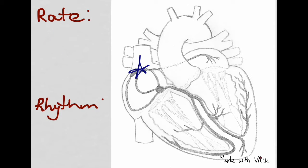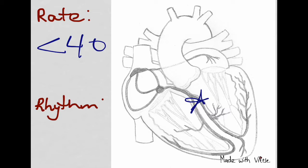If the heart rate originates in the ventricles, it will have an intrinsic rate less than 40 and the rhythm will be a wide and bizarre complex.